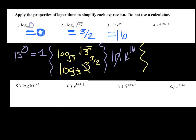Number four: 5 to the exponent — and the entire log base 5 of 12 is the exponent. Our property says that when the base of our exponent and the base of our log are the same, they cancel out and you're left with just 12. So that expression equals 12.